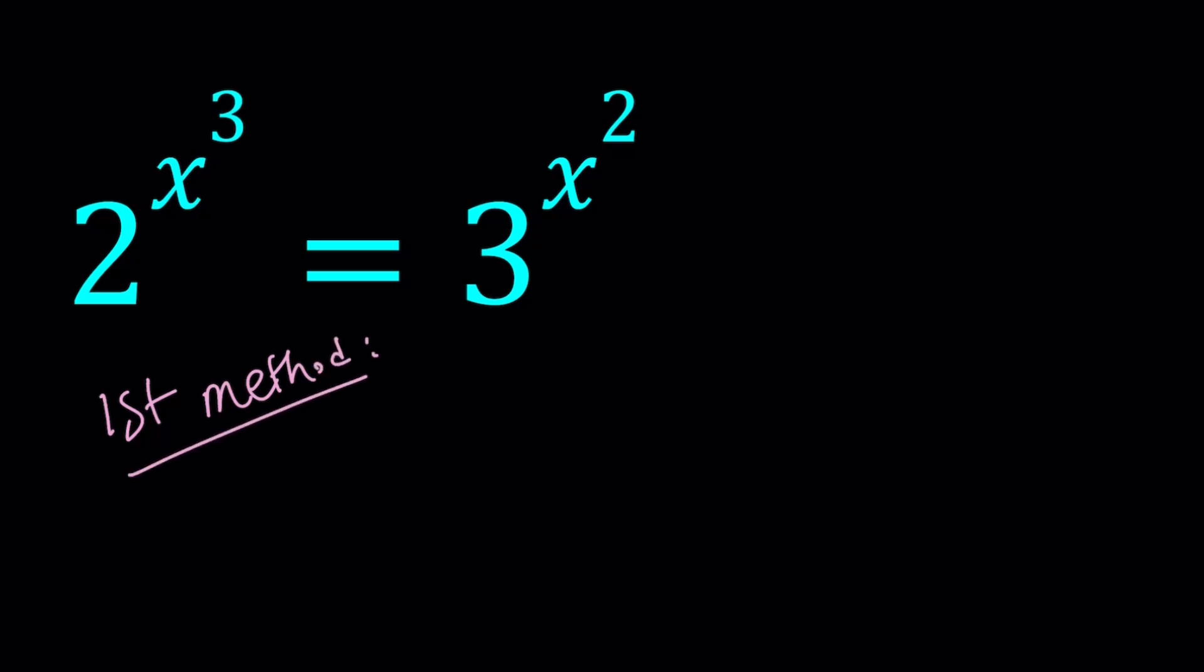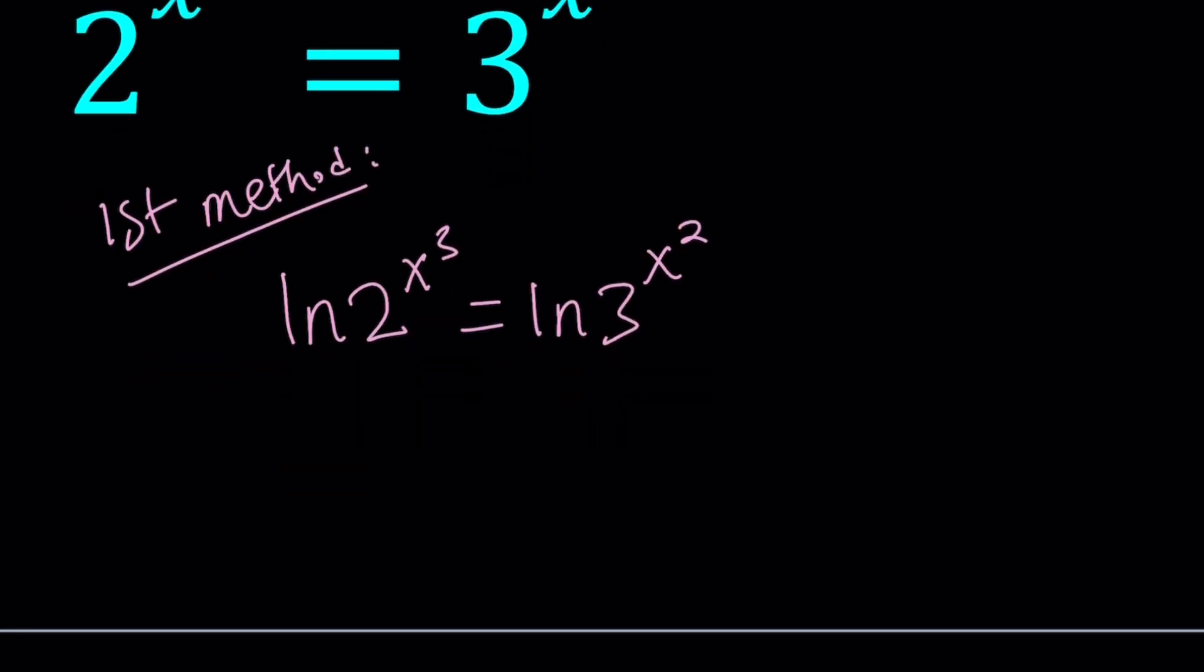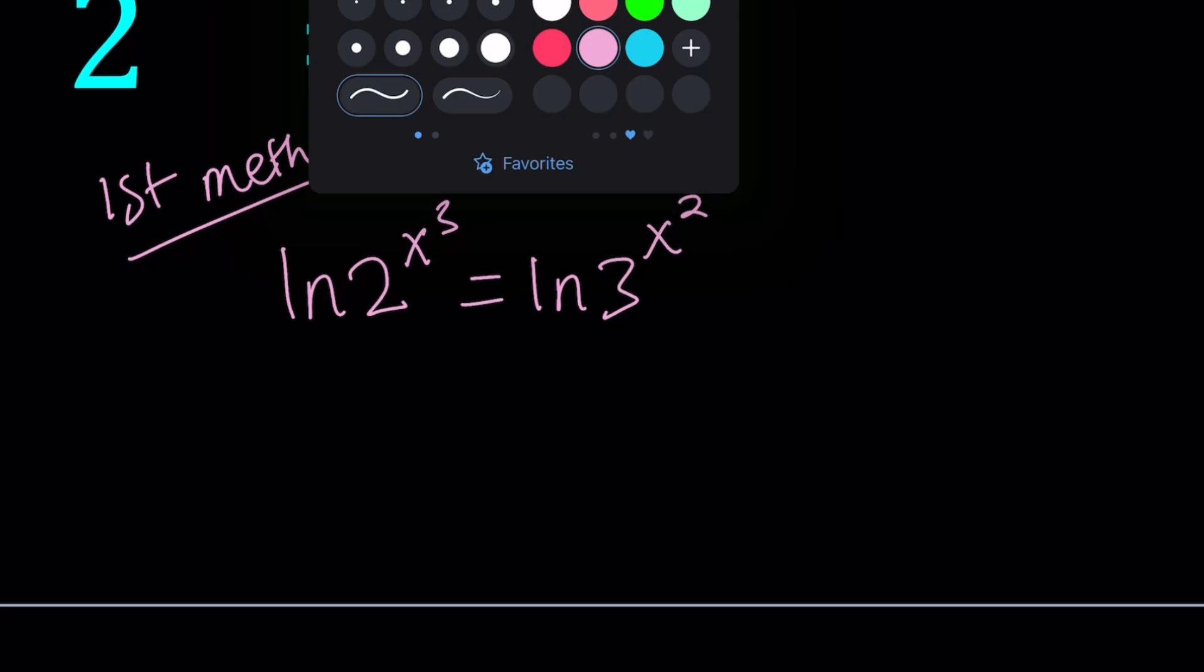So for my first method, I'm going to go ahead and ln both sides of this equation. So if you ln 2 to the power x cubed, that equals ln 3 to the power x squared. Now, logging both sides or ln-ing both sides, same thing, right?